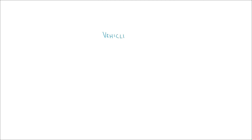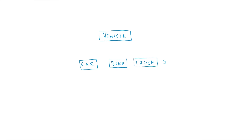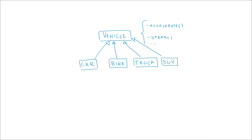Going back to the vehicle example, having different types of vehicles like cars, trucks, or SUVs — or even tires with a specific specialization — could be reused between them. In the case of the vehicle, for example, you wouldn't have to implement acceleration in all the classes. You could just have a vehicle class where you implement acceleration, and then cars and trucks could have a specialization on top of that.